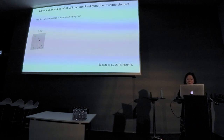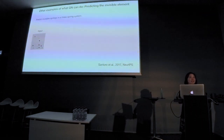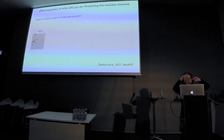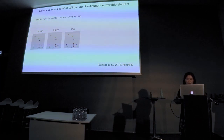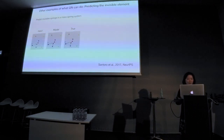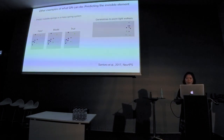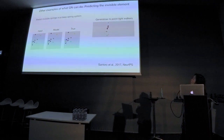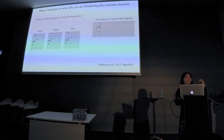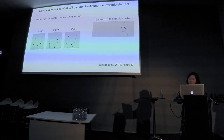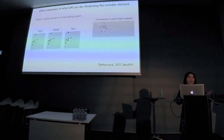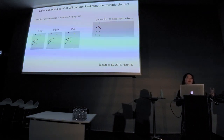Other examples: you can put invisible springs in a mass-spring system. The inputs are a bunch of bouncing balls, and you try to find the invisible springs. Here is the model versus the truth — you could not have seen the little mass-spring system, but the invisible springs are right there. Or you can generalize to walkers — this is not our work, but it's really cool. By eye you can tell where the connections are, but for the system to figure it out is actually pretty hard.